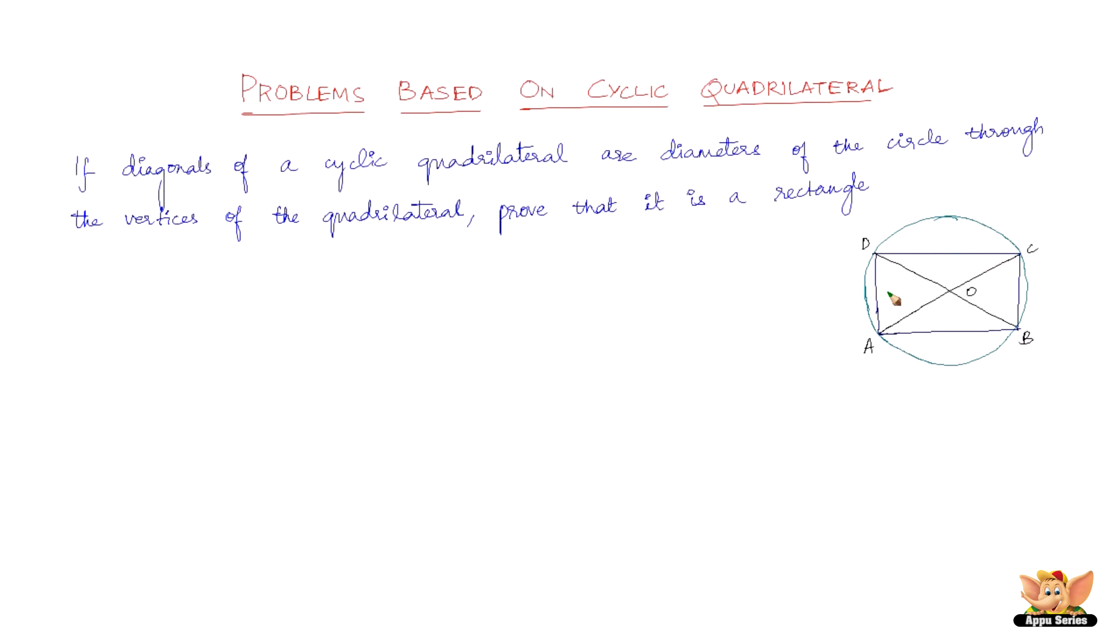Now let ABCD be a cyclic quadrilateral such that its diagonals AC and BD are the diameters of the circle through the vertices ABCD. Since AC is a diameter and angle in a semicircle is a right angle, therefore we've got...